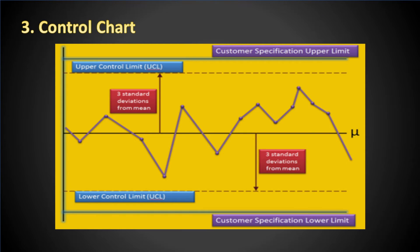A control chart is a graphical display of data over time and against established control limits that has a centerline that assists in detecting a trend of plotted values toward either control limit. To explain it simply, control charts are a way of visualizing how processes are doing over time.